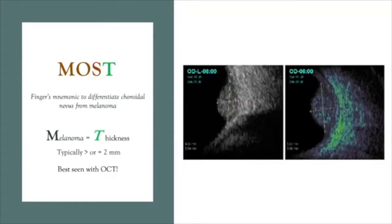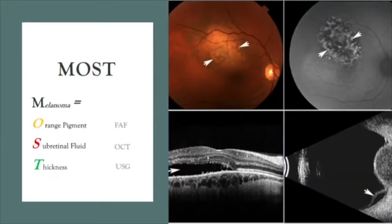T is the last letter of MOST. T stands for thickness. Typically, two or more millimeters is considered a risk factor that a nevus is likely a melanoma. A-scan was used classically to measure the anterior-posterior thickness of melanomas; however, currently, and especially for small lesions, B-scan can be easier. So, to summarize: MOST stands for melanoma equals orange pigment, subretinal fluid, and thickness — orange pigment best seen with fundus autofluorescent imaging, subretinal fluid best seen with OCT imaging, and thickness best measured by ophthalmic ultrasonography.